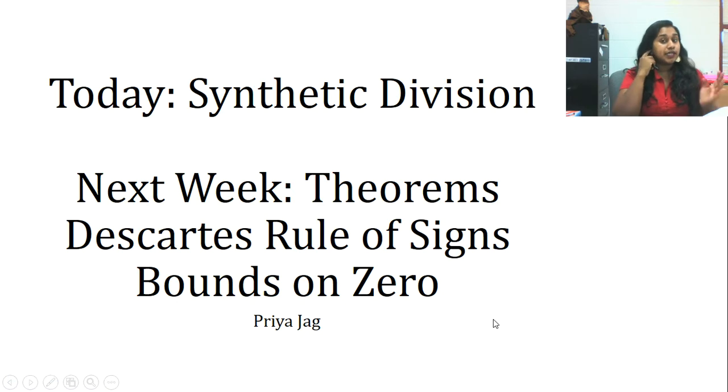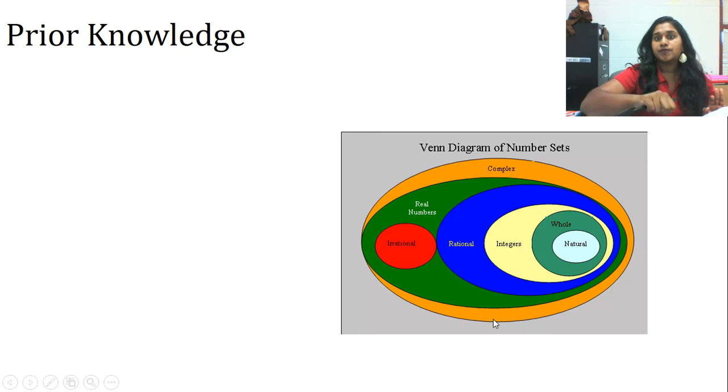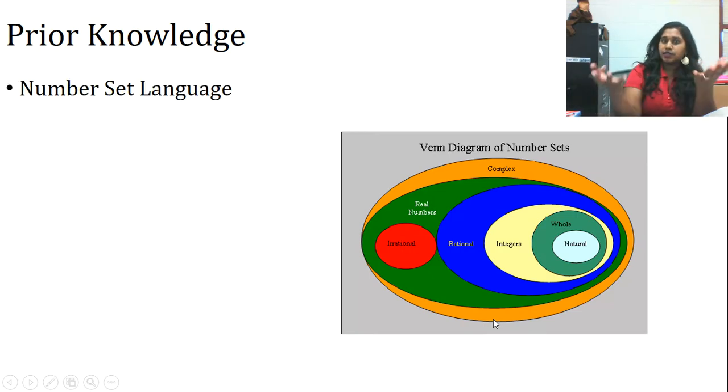Okay, so today's synthetic division, next week we will work on our theorems and then real-world polys. So some prior knowledge you need is that number set language. Just a reminder, this is our number set: natural, whole, integers, and rationals. I hope that we can recall that. Irrationals are on the outside, real numbers are all of these, and then complex numbers are outside of that set. We're talking about the imaginaries and all of that.